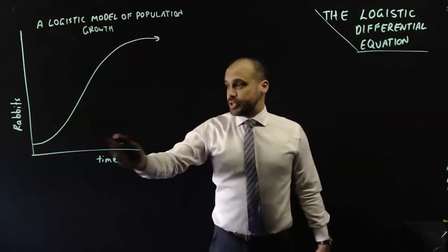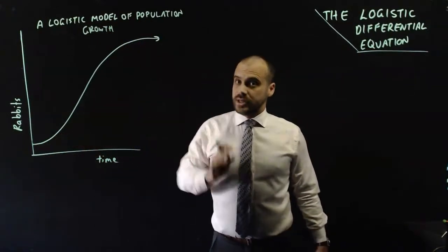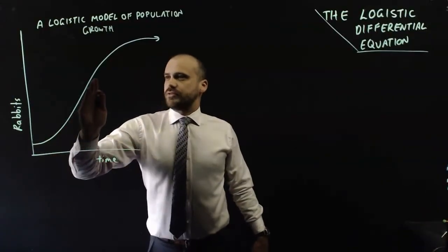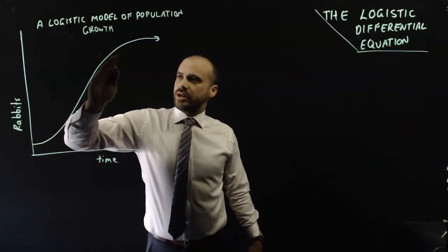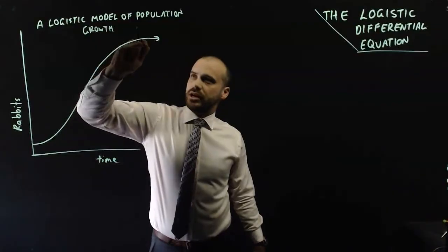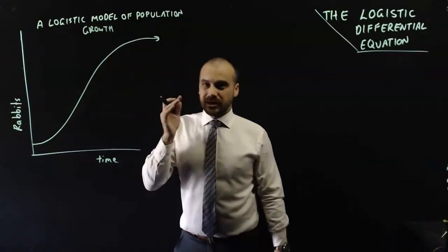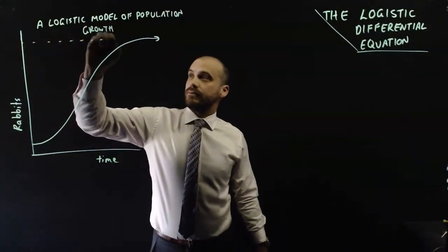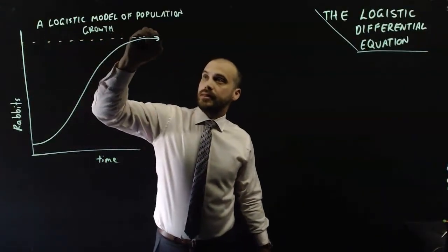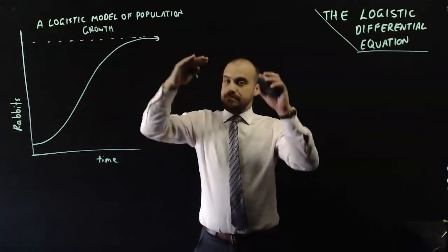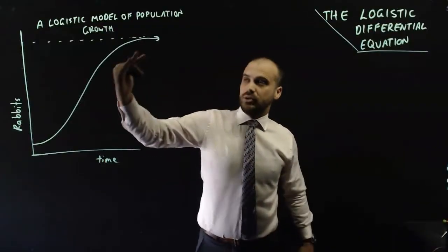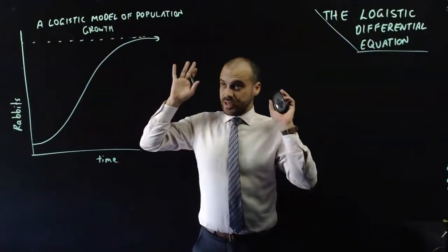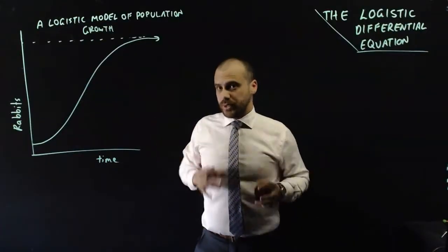A logistic model of population growth looks like this. The rabbits start to grow faster and faster, then they start to run out of resources and reach some limiting asymptote. They get closer and closer to their maximum population but never quite reach it — just closer and closer. This is a pretty good model of population growth.